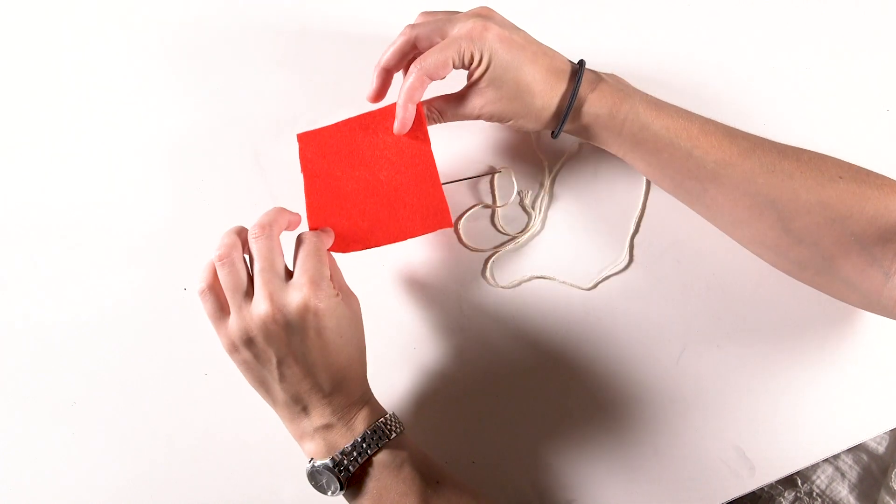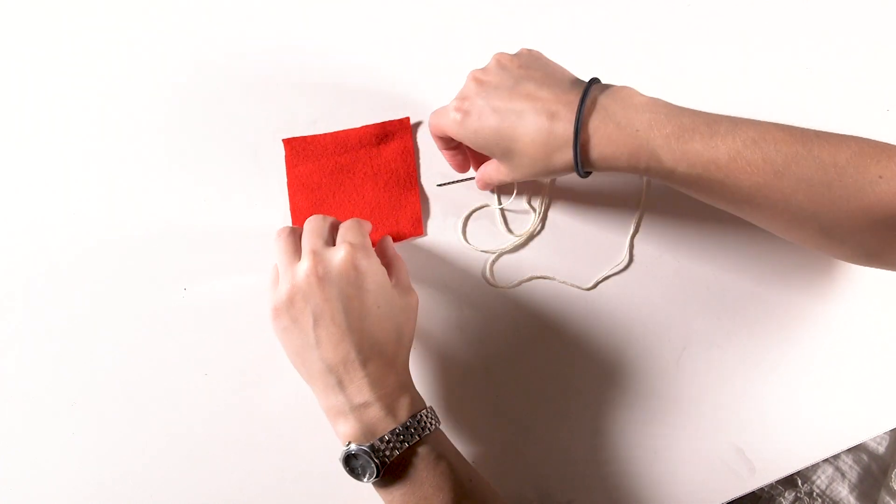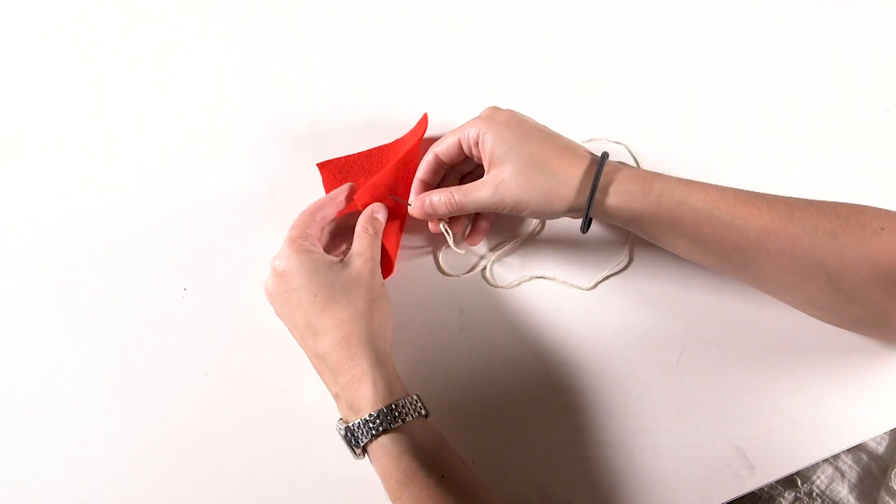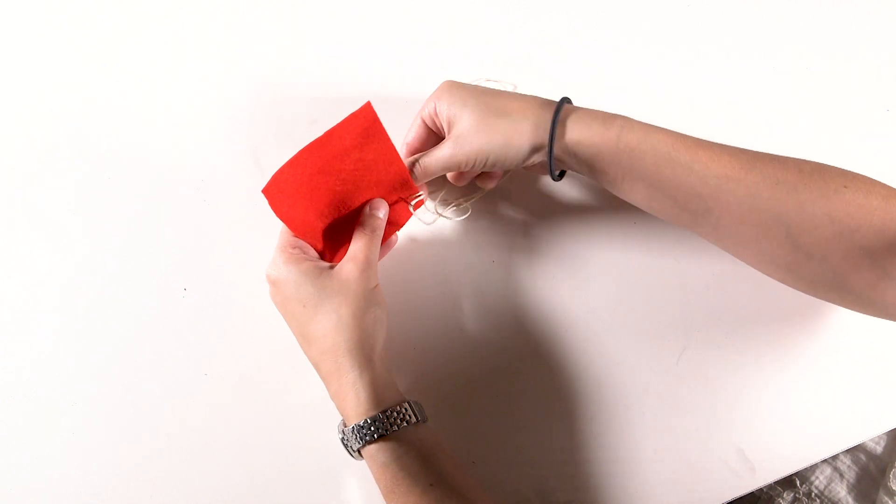Then decide which are going to be the bottom and top pieces of your material and starting from the bottom, go up to the top side and make a small stitch of about half a centimetre and go back down to the underside.